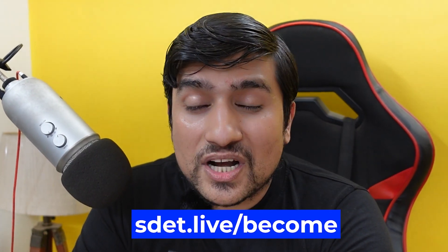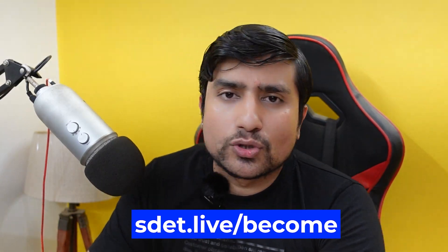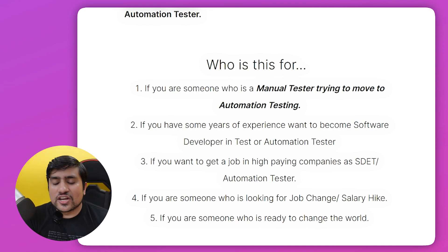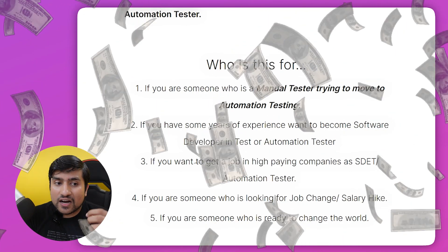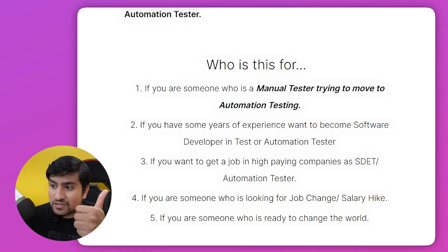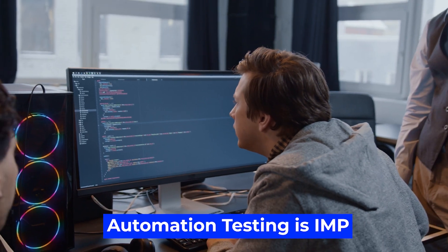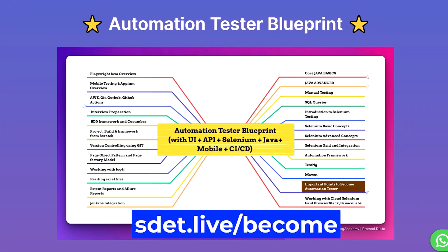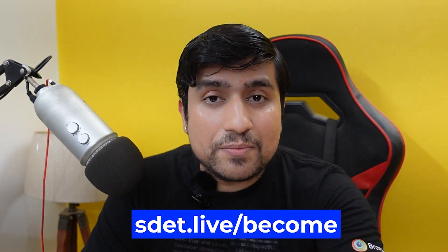If you want to know more details, you can go to sd.live/become. This is really important if you're a manual tester who wants to switch to automation testing, or if you're a fresher who wants a high salary and wants to jump in directly as an automation tester. Automation is the need of the hour, so make sure you check out the links at sd.live/become and be a part of it. I'll see you in the live classes — thanks a lot!